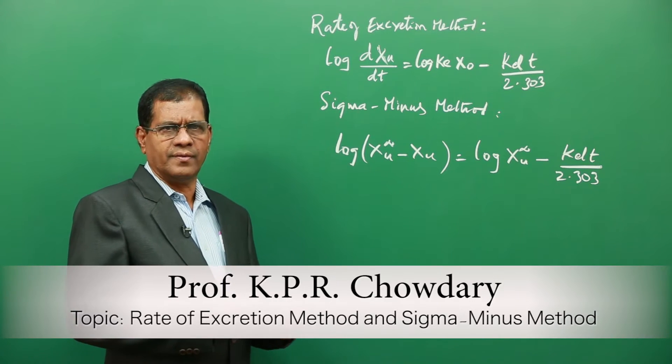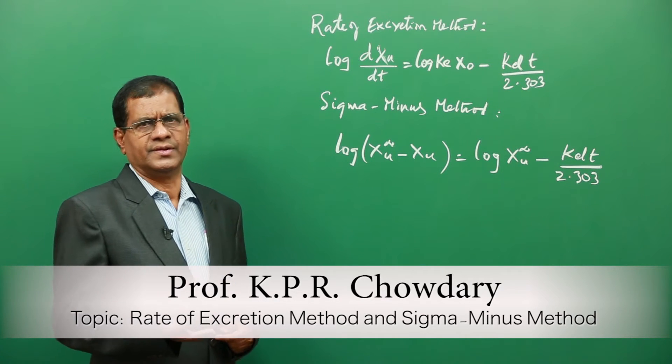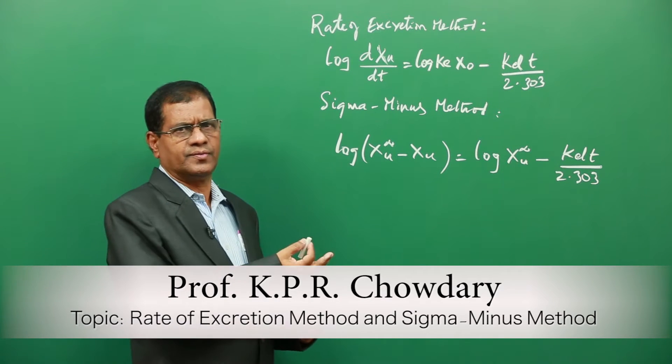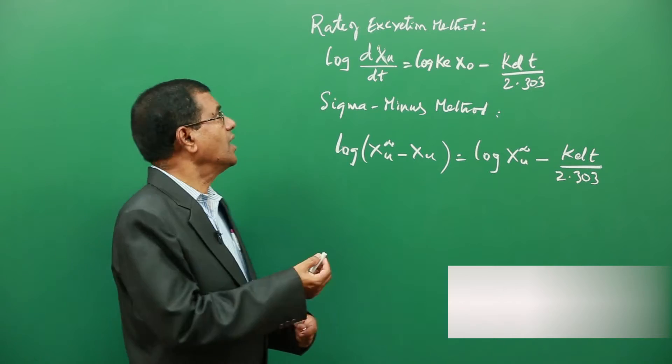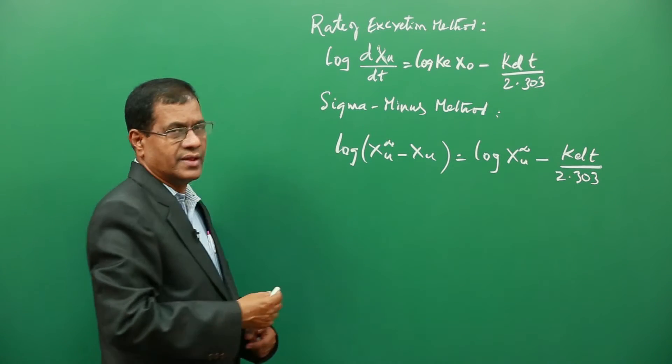The biological half-life can be estimated by two methods. The first method is known as the rate of excretion method.